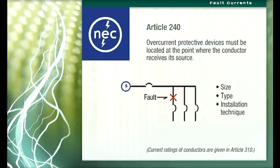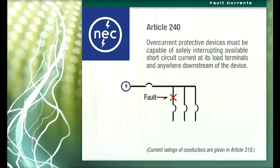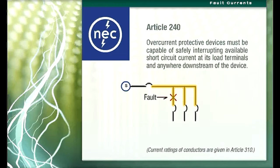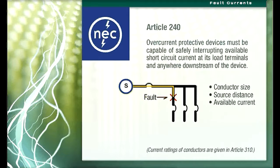The protection must be suitable for the size, type, and installation technique for the conductor. The current ratings of conductors are given in Article 310. Article 240 also requires that the overcurrent protective device be capable of safely interrupting available short circuit current at its load terminals and anywhere downstream of the device. The value of the short circuit current at any point in a circuit is a function of the size of the conductors, the distance from the source to the short circuit, and the current available from the source.